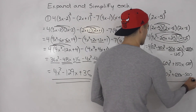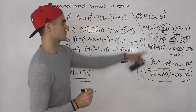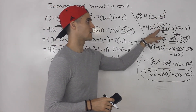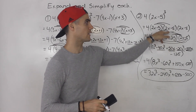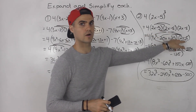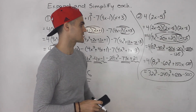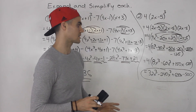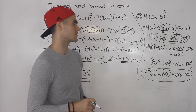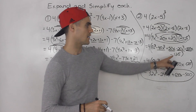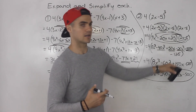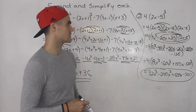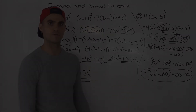When you have a power of 3, you write out three brackets, expand two of them first, then expand that result against the third bracket. It's pretty tough — you just have to be careful with your algebra. Make sure you're really diligent because any slip in multiplication or a sign will give you the wrong answer. Just be careful and you should be fine.